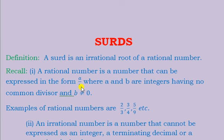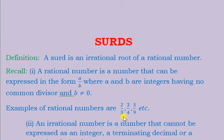Remember, any number divided by zero in mathematics does not exist or is not defined. Let's look at a few examples of rational numbers. For example: two out of three, three out of four, five out of nine, etc.